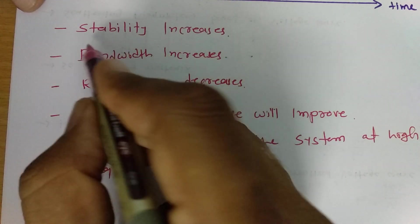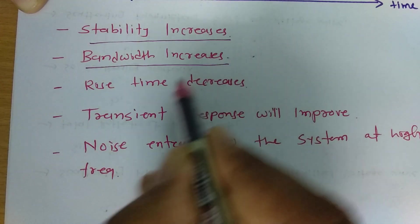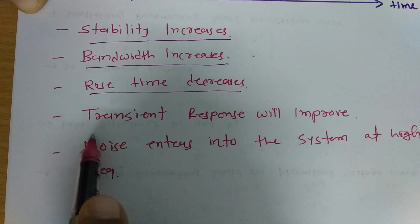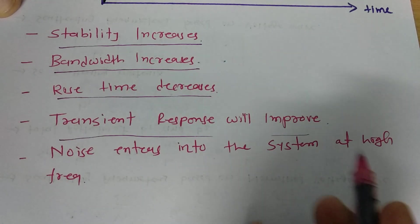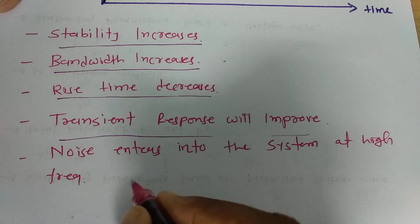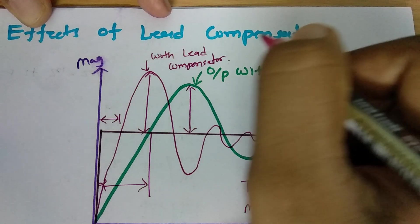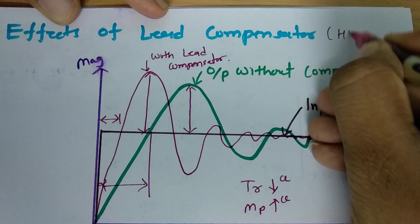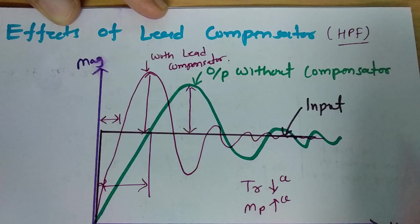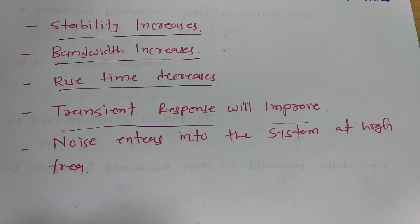A few more things to note: stability increases, bandwidth increases, rise time decreases, the response is faster, and noise enters the system at high frequencies. The reason is that the lead compensator is a high-pass filter — as I explained in the last session, you can refer to that where I derived what is there with the lead compensator.